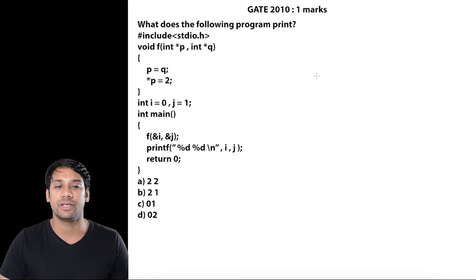This question was asked in GATE 2010, and they have given a program using two pointers, pointer p and pointer q. They want us to find the output, so let us try to execute this program.